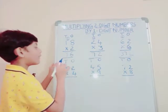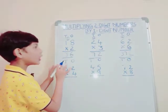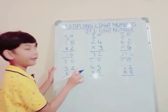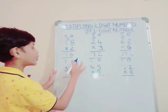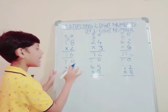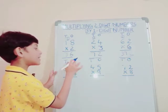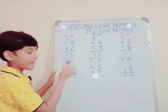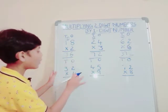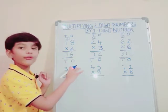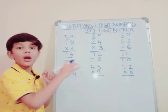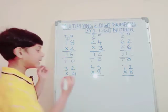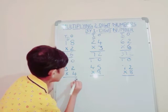Our third sum answer is 372. Now our fourth sum: 32 into 4. First of all, we should multiply the 1's digit number by 4. That is: 4×1=4, 4×2=8. We should write 8.